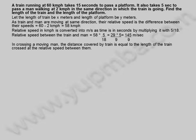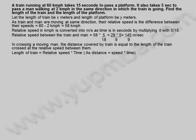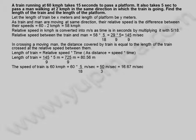In crossing a moving man, the distance covered by the train equals the length of the train, crossed at the relative speed between them. Length of train equals relative speed into time, as distance equals speed into time. Length of train equals 145 divided by 9 into 5 meters, equals 725 divided by 9 meters, equals 80.56 meters.